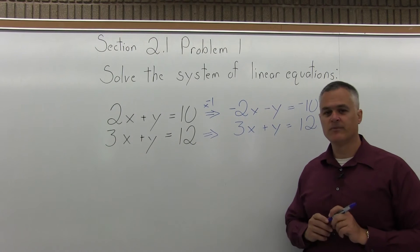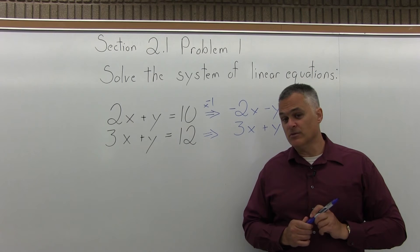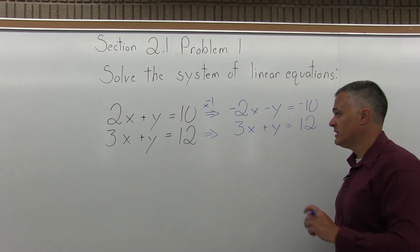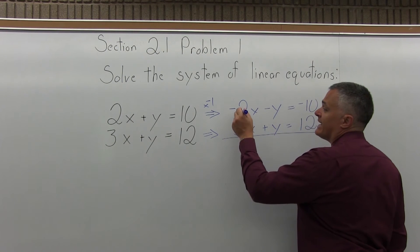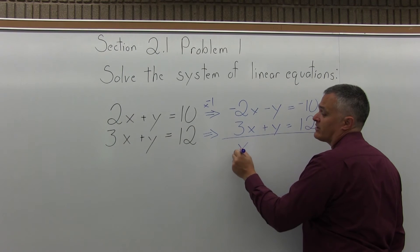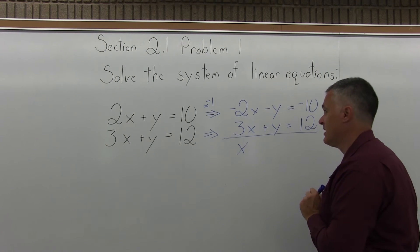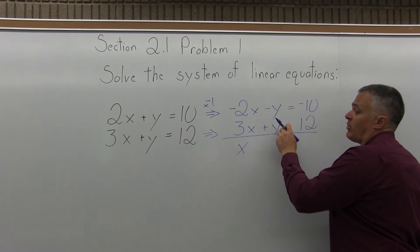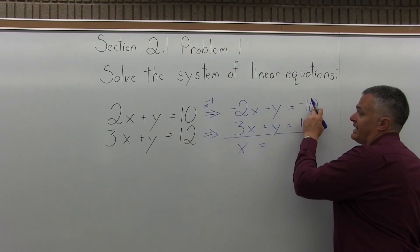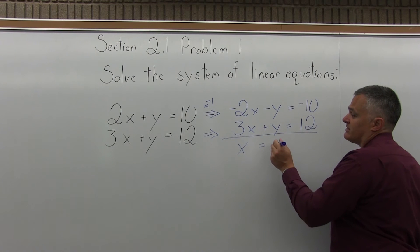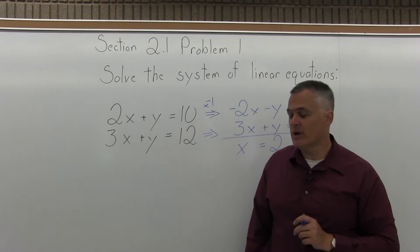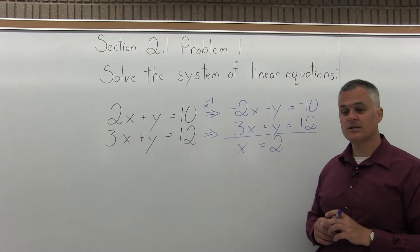Step 2 is add the equations together to cancel a variable. When I add these equations together, negative 2x and positive 3x is positive x. Negative y and positive y cancels. On the right side of the equal sign, negative 10 and positive 12 gives me 2. That's Step 2 — add the equations together to cancel a variable. The y canceled.